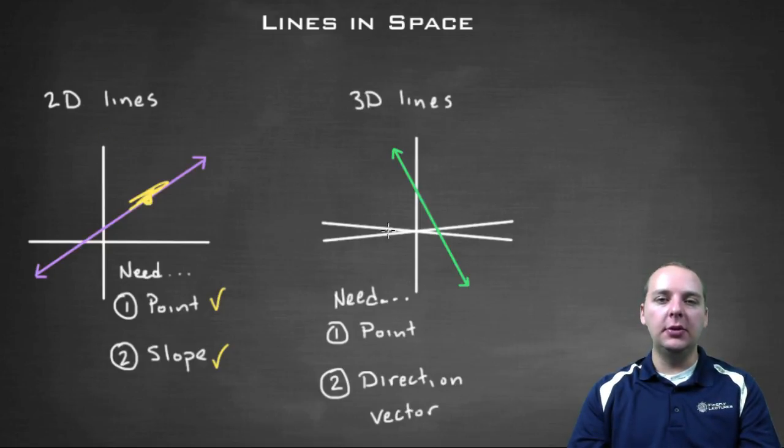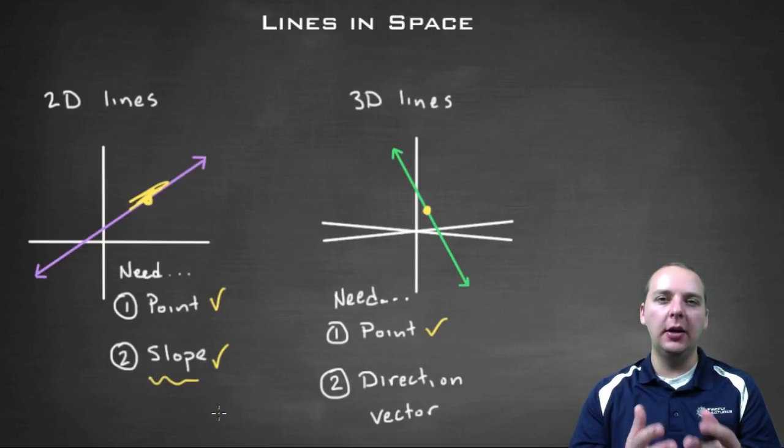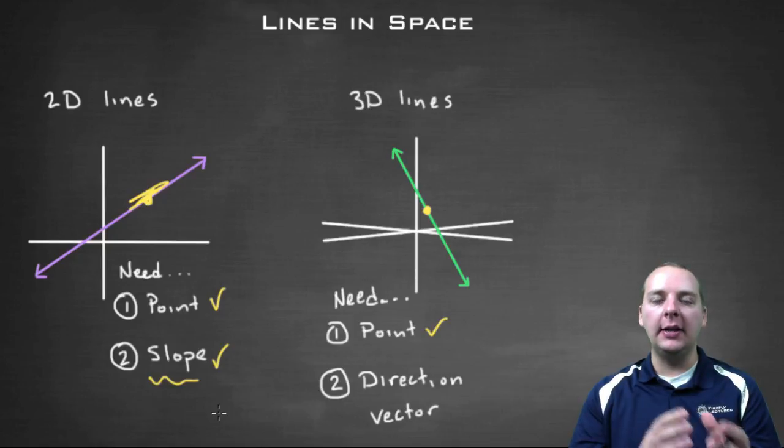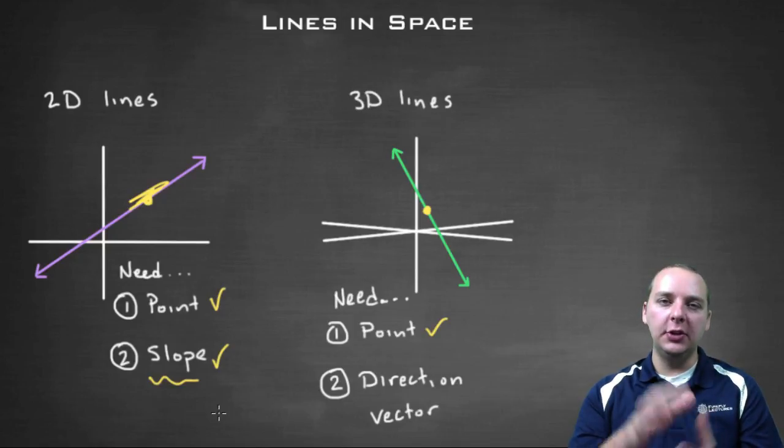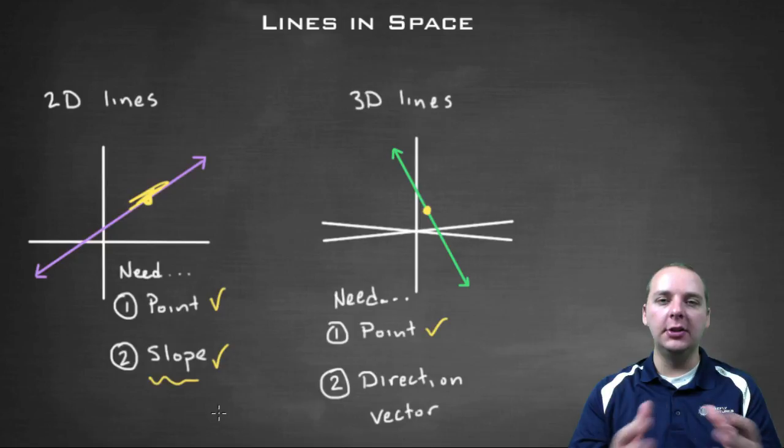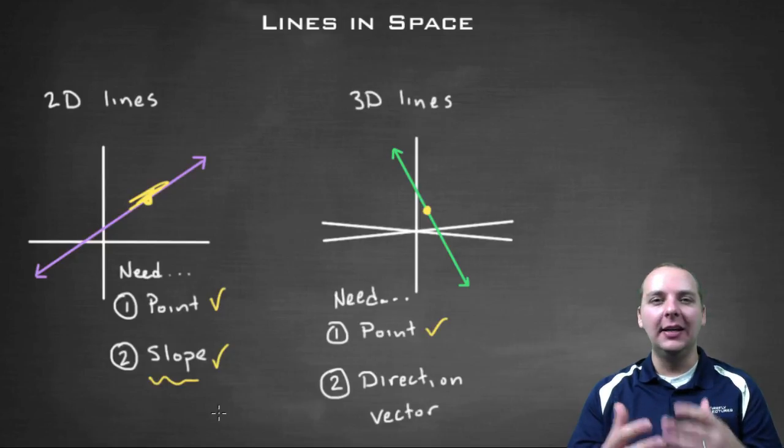Now if you're in three-dimensional space though, it's a little different. You do need a point that's on your line to write the equation of the line, but you kind of lose this notion of slope. Because if you think about it, slope is like rise over run, it's the change in y compared to the change in x. But in space, you don't just have y and x, you have x, y, and z. And so the notion of slope is a little bit lost.